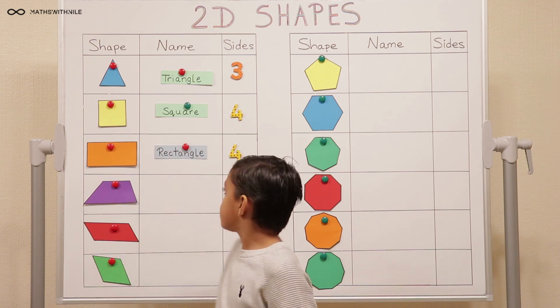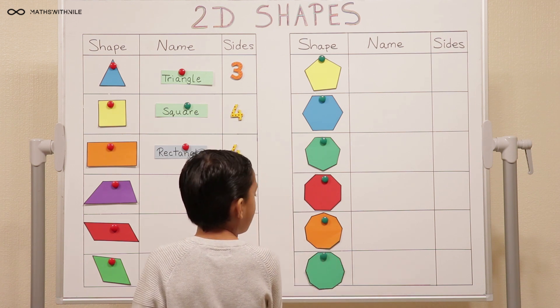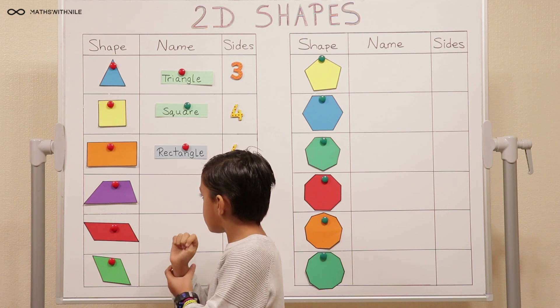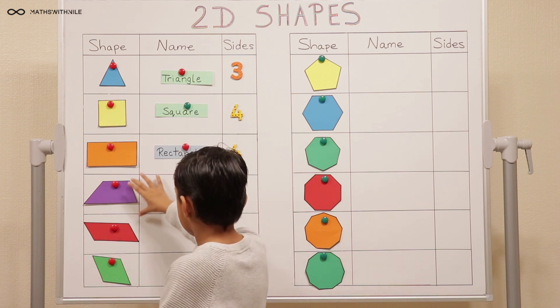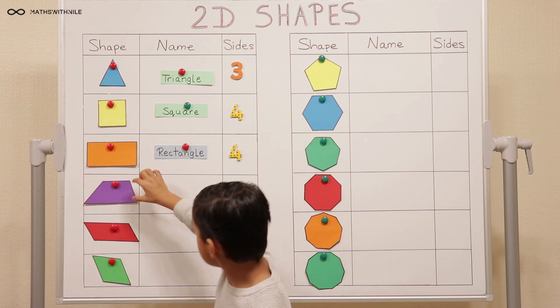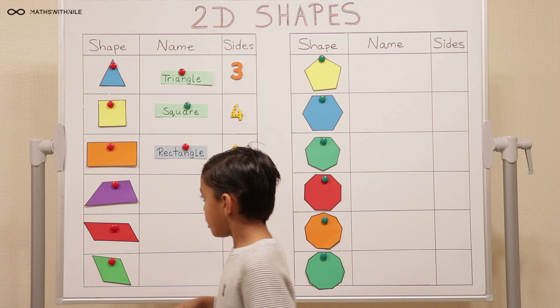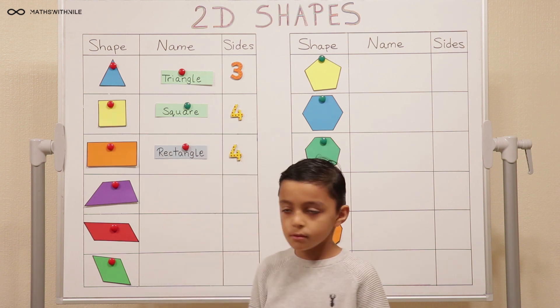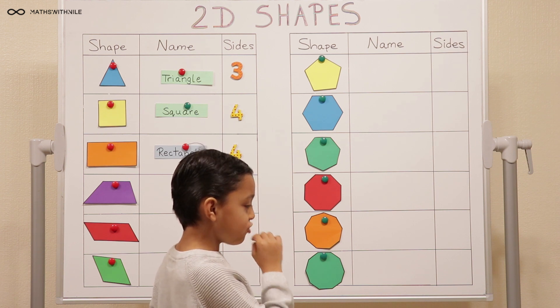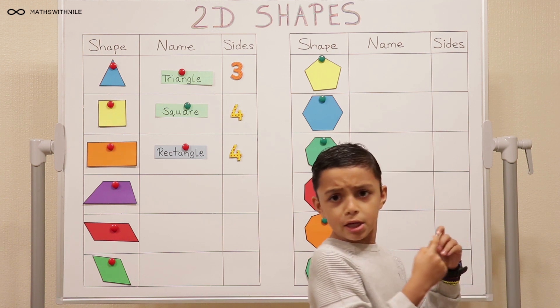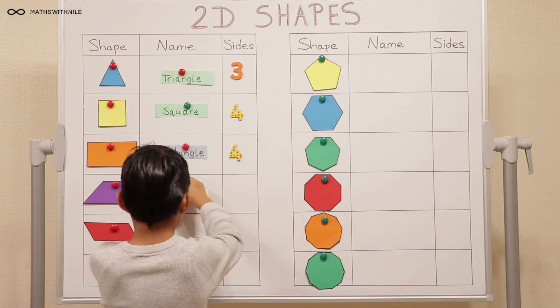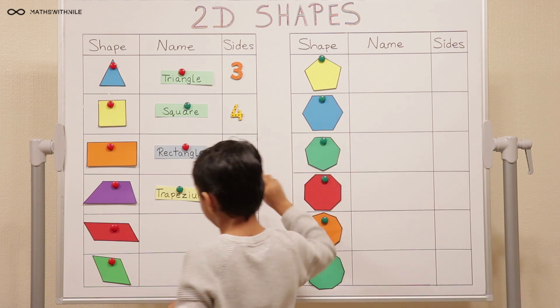So what about the next shape under there? Can you describe that shape? It has four sides. Does it have any parallel lines? It has one pair of parallel lines. So what do we call a shape with four sides and one pair of parallel lines? It starts with a T. Trapezium. Very good. Trapezium, and it has four sides. We have a lot of four sides.